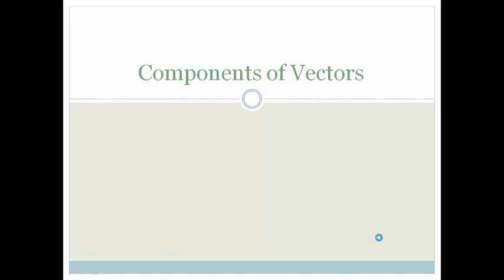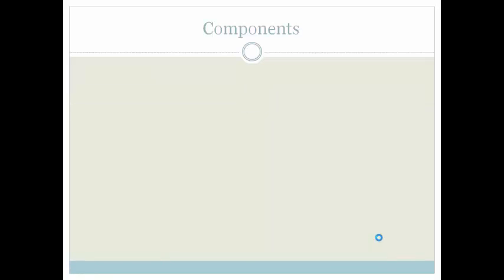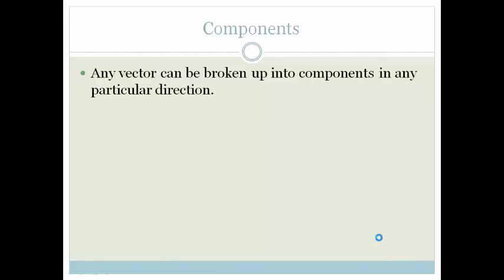I know I said that there were three ways that we could work out our resultant of vectors. The one was the triangle method, the second was the parallelogram, and the third was the polygon method. But in order to work out the polygon method, you need to know how to take a vector and divide it into its components. So any vector that we draw can be broken up into components in any particular direction.